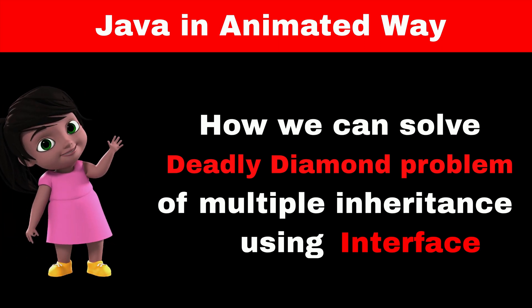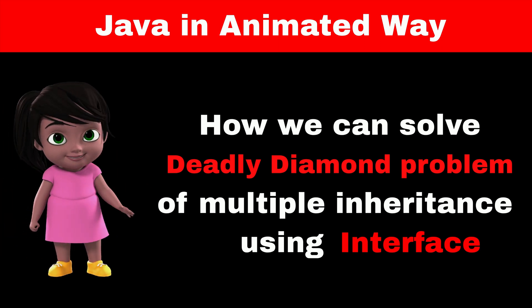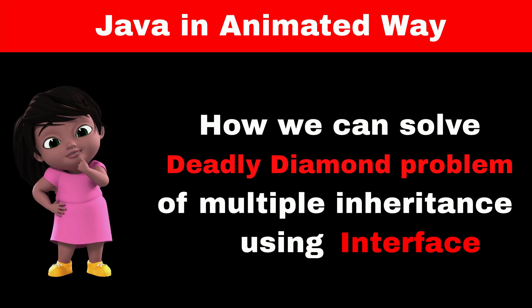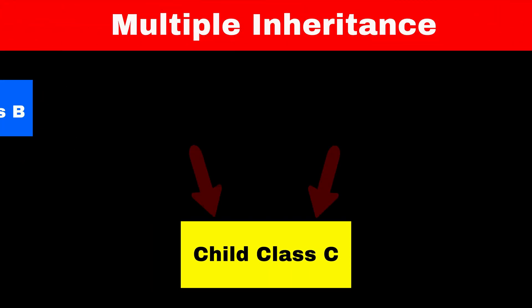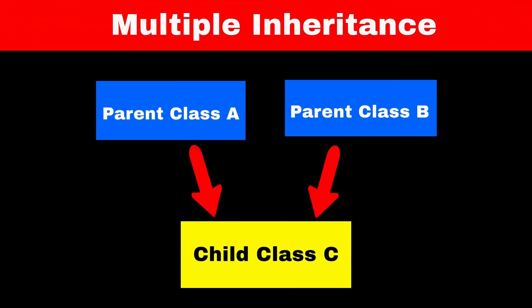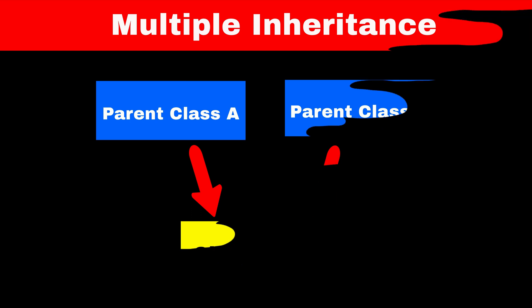Do you know what is the deadly diamond problem of multiple inheritance, and how we can solve it using interface multiple inheritance? This means one child class can have two or more parent classes. Now let's understand what is the problem with multiple inheritance.